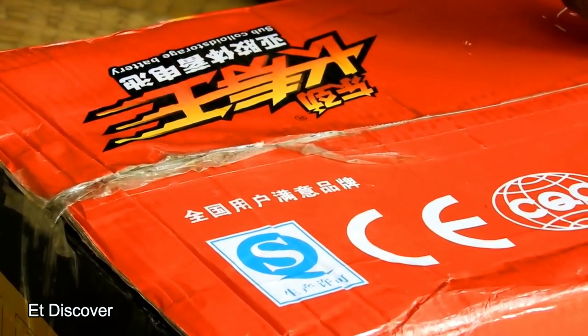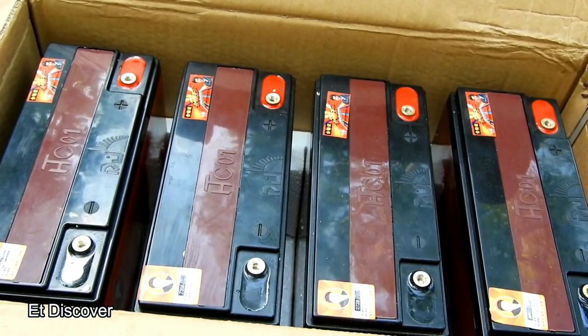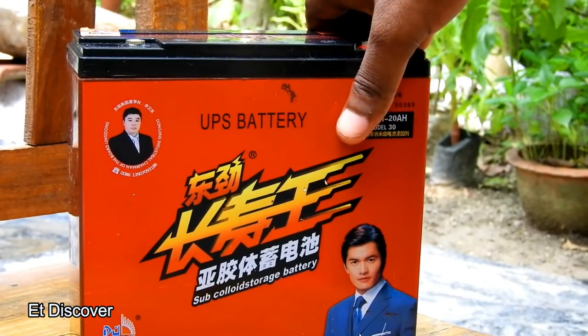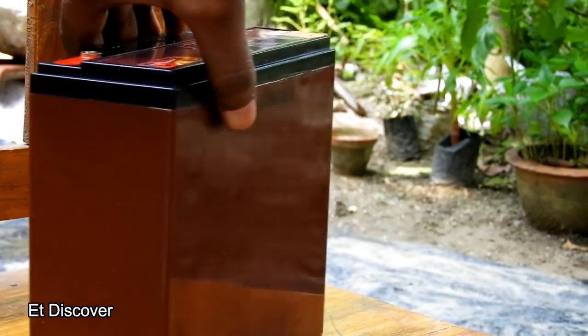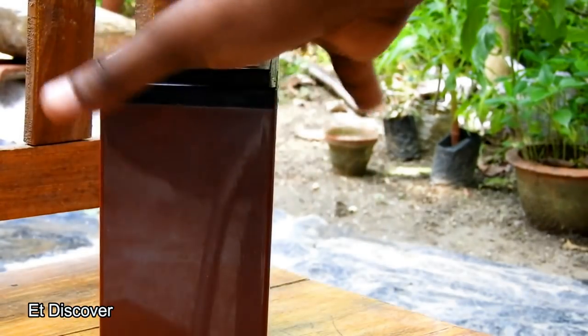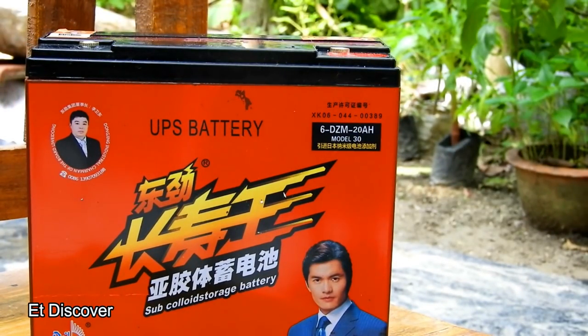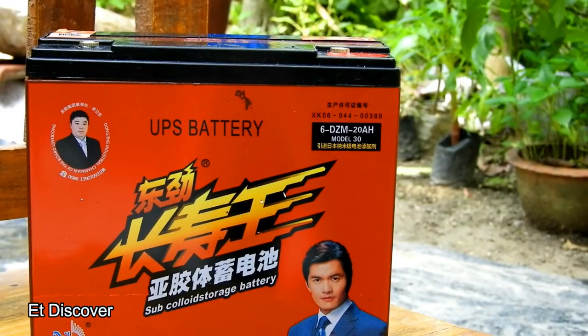At first I opened the cells from these 30 amp hour 4 battery packages and I take out the batteries from these packages. This Chinese batteries look quite pretty, right? This Chinese battery will weight maximum 10.2 kilograms.